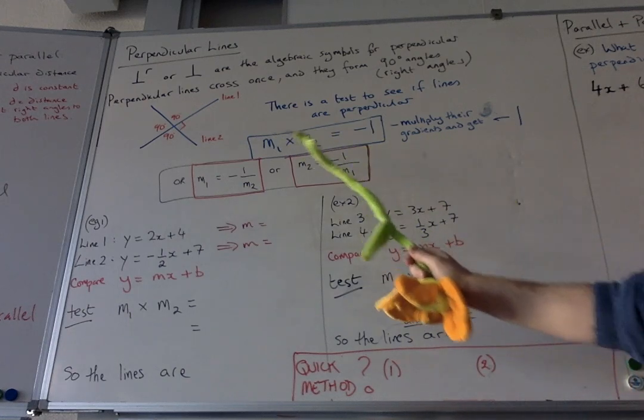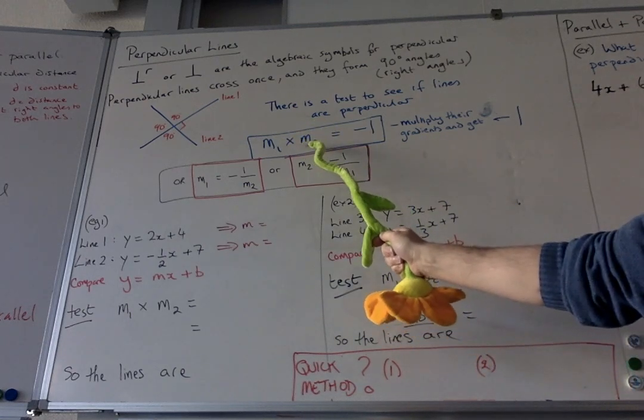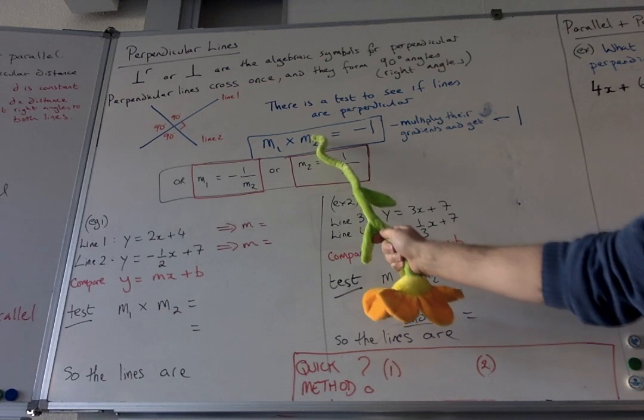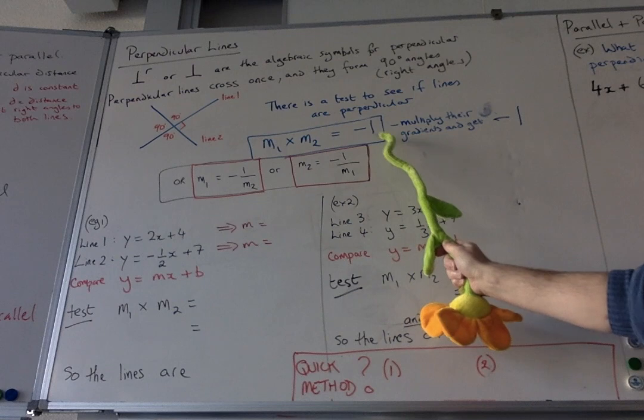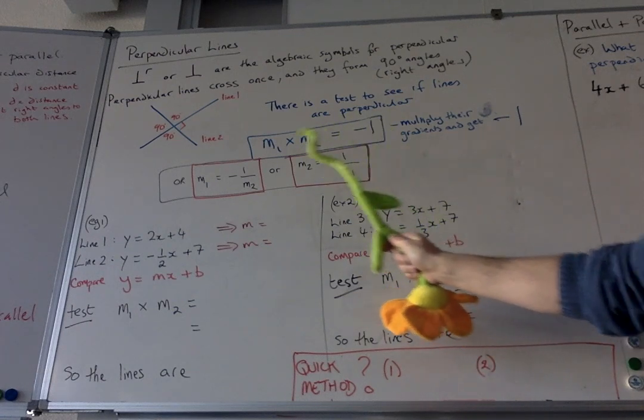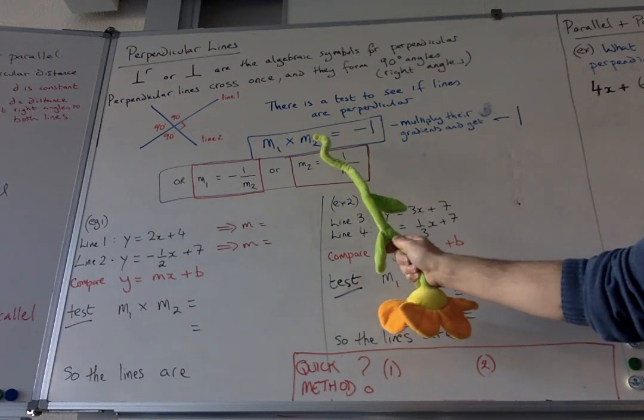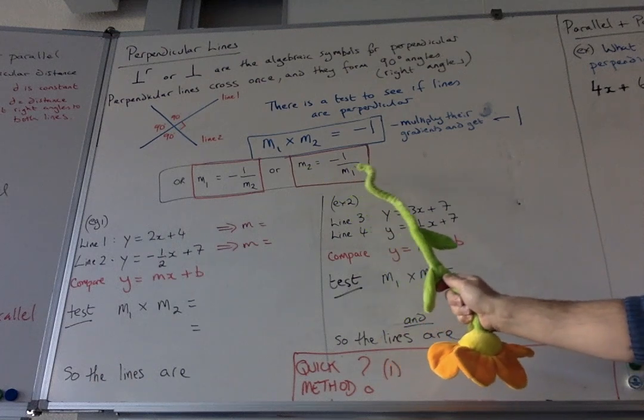The other way you could think about this is if I divided both sides by m2, this m2 would disappear because it became one. If I decided to divide both sides by minus m1, then the m1's here would disappear and you'd end up with that.